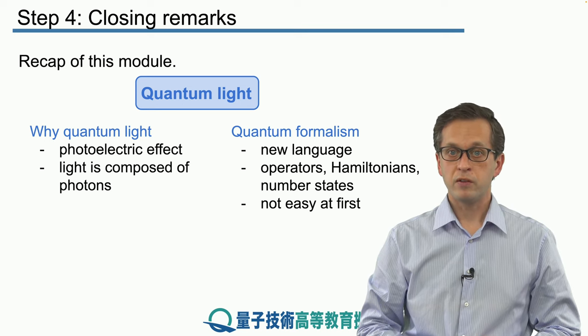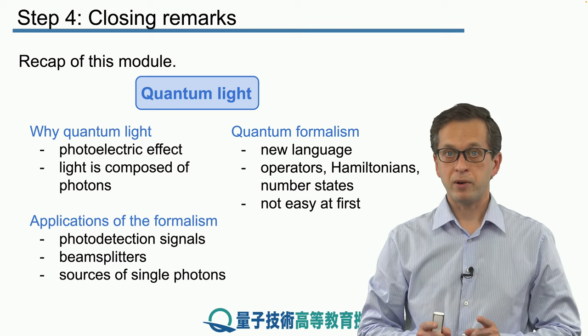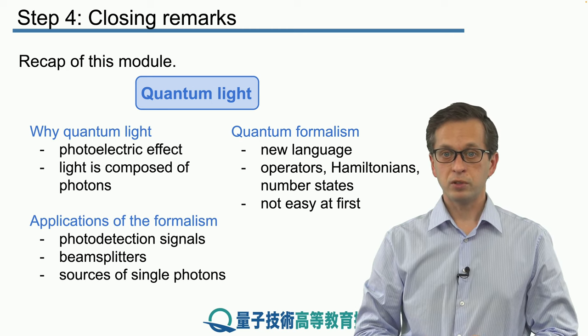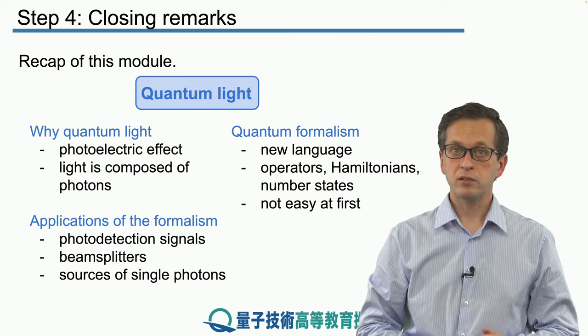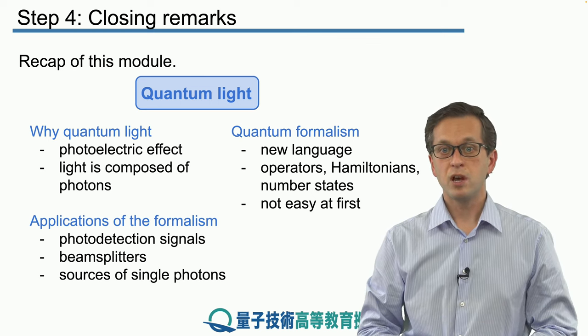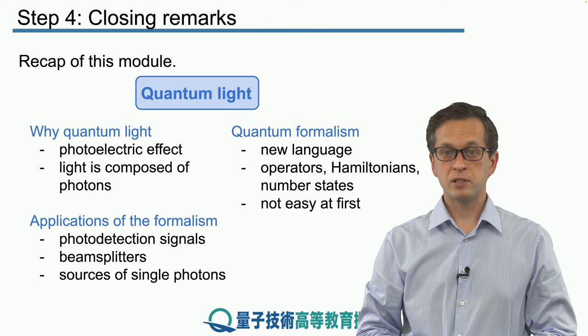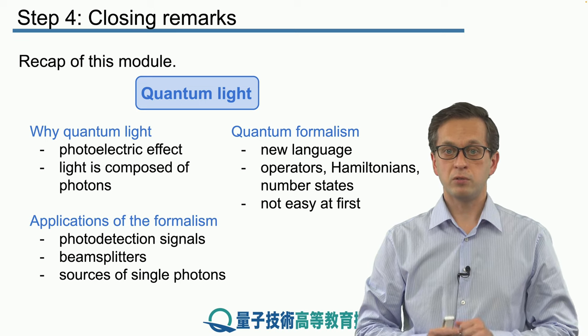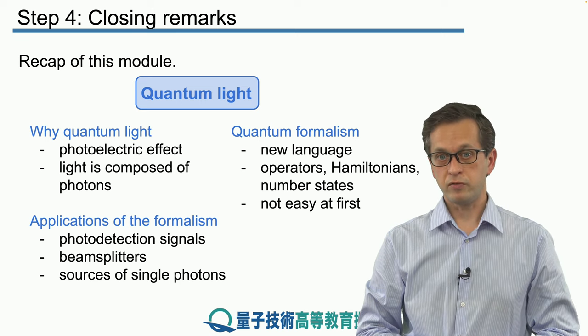Therefore, we gave you a lot of exercises in applying this formalism, namely in the form of calculating photodetection signals for single photodetection, double photodetection, or coincidence counts. We showed you how to apply the formalism when we talk about beam splitters and interferometers, and we also talked about sources of single photons.